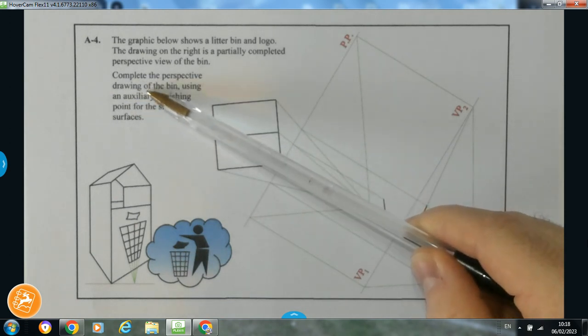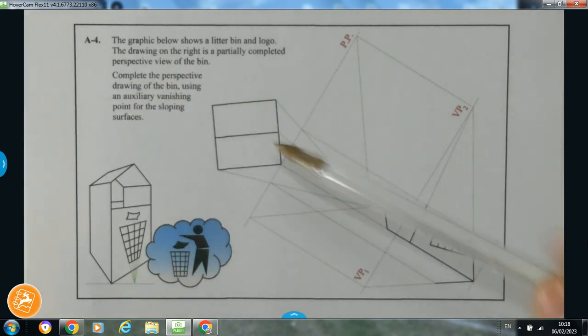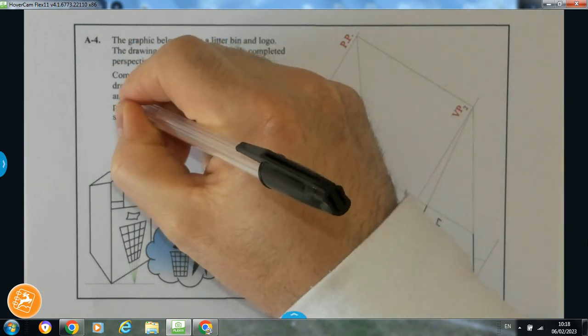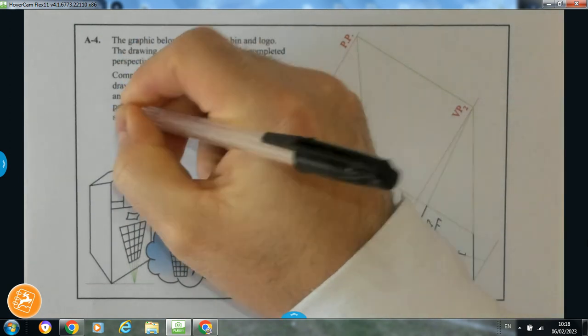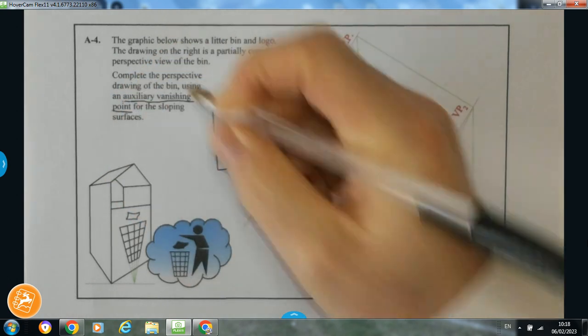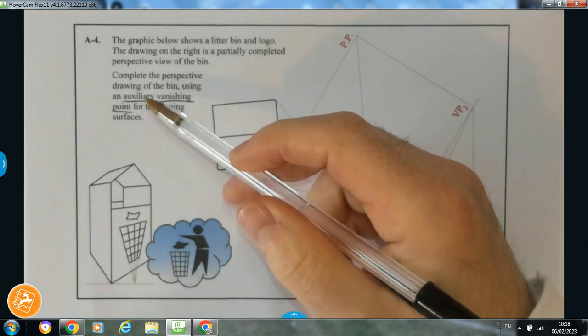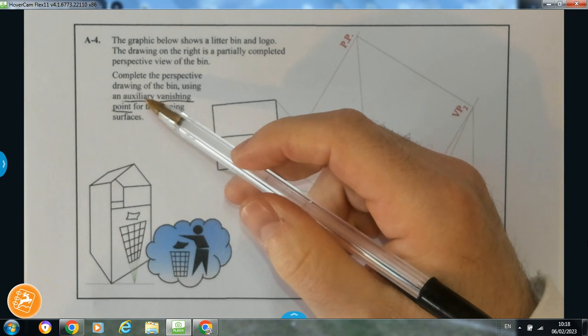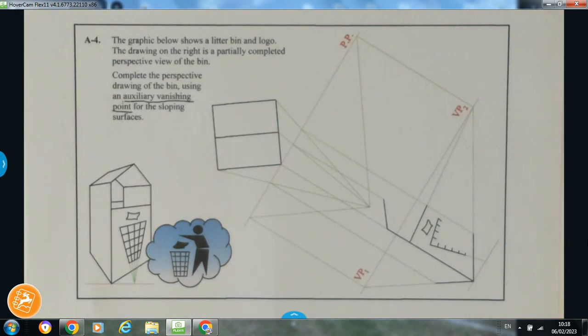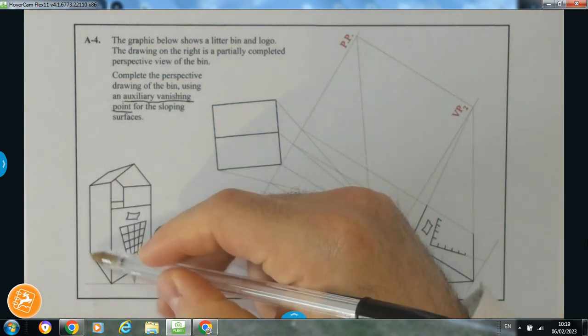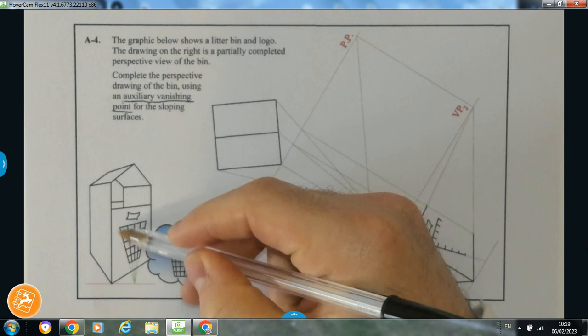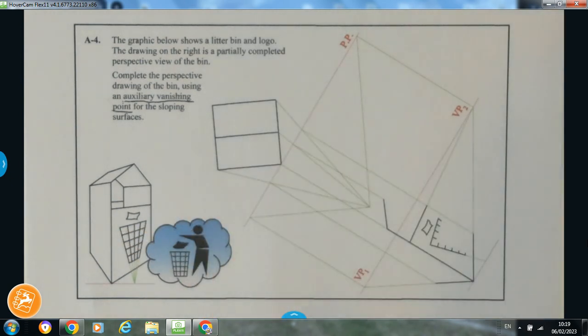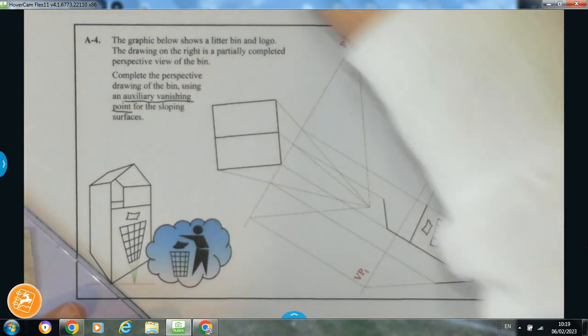But then it says complete the perspective drawing of the bin using an auxiliary vanishing point for the sloping surfaces. So that's an important one there. Often the difference in higher level and ordinary level is they'll ask you at higher level to get auxiliary vanishing points, especially in a short answer question and always generally in a long answer question as well. But before we get on to the auxiliary vanishing point, we're going to actually complete some of the detail that we can do before we get the auxiliary. So I'm going to start putting in the side face here and the bin structure.